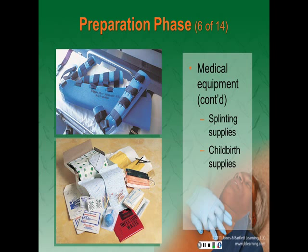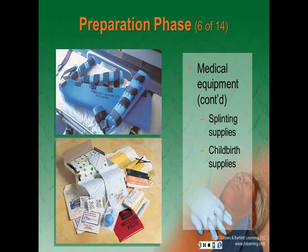Childbirth supplies should include at least one sterile emergency OB kit containing surgical scissors, hemostats or special cord clamps, umbilical tape or sterilized cords, small rubber bulb syringes, towels, gauze sponges, several pairs of sterile gloves, sanitary napkins, a plastic bag, a baby knit cap, and a baby blanket.